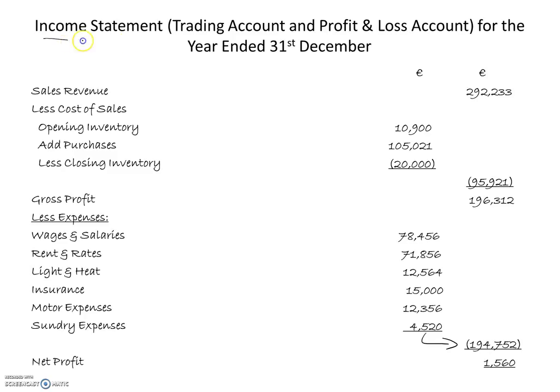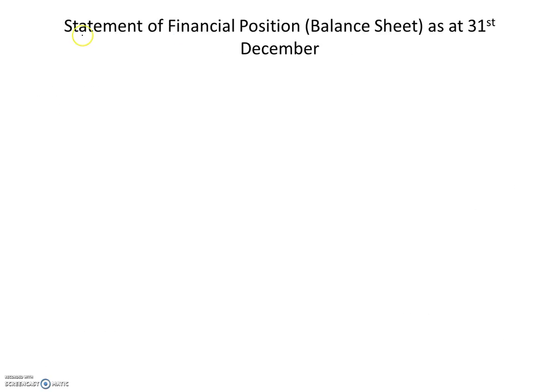Now we move on to look at the statement of financial position, also known as the balance sheet. The statement of financial position is a listing of the assets, a listing of the capital, and a listing of the liabilities on the last day of the financial year, which in our case is the 31st of December. I am going to start off by listing my assets, and my assets will be divided into two components: non-current assets and current assets.